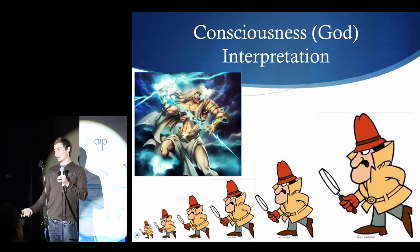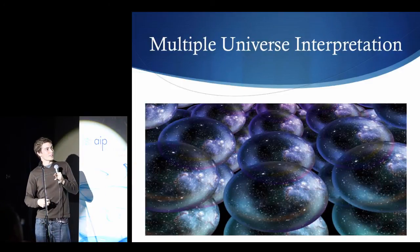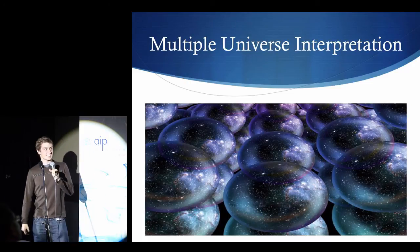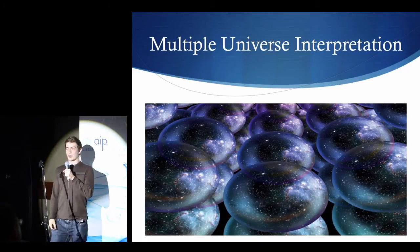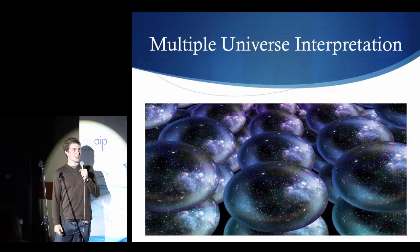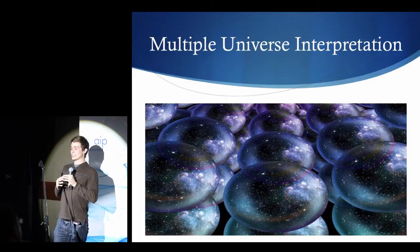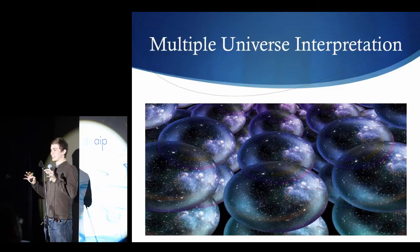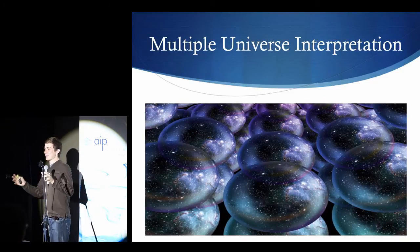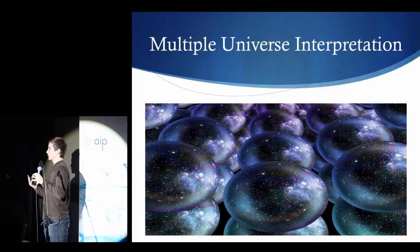Now, I mean, that's an interpretation. Another one is the multiple universe interpretation. Now, this is, it sounds bizarre, but perhaps it makes the most sense. It then goes something like this. Basically, since everything is given by this wave equation, instead of the wave equation collapsing at all, every possible outcome happens. And for every possible outcome, a new universe is created.